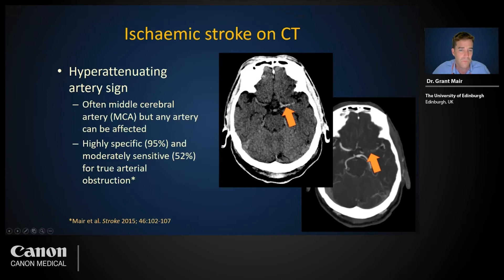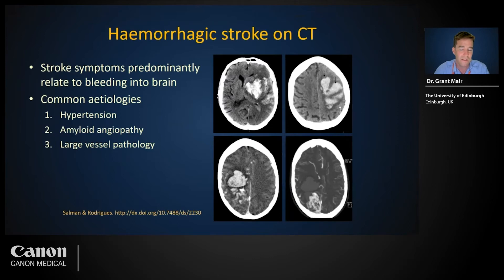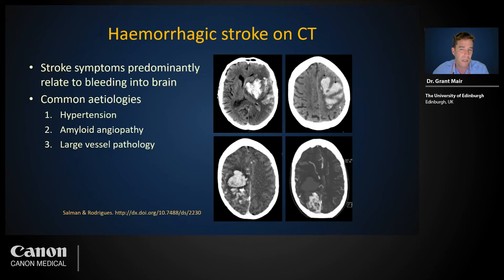Stroke caused by hemorrhage is usually more easily seen in the earliest stages — note the dense or hyper-attenuating blood on these images. There are three common non-traumatic causes of spontaneous intracranial bleeding: uncontrolled hypertension, typically causing bleeding into deeper structures such as the basal ganglia or brain stem; amyloid angiopathy, typically causing lobar bleeding with finger-like extensions into gyri and sulci; and underlying vascular abnormalities such as arteriovenous malformations. Ruptured aneurysms can also be considered here.